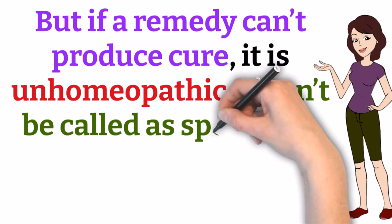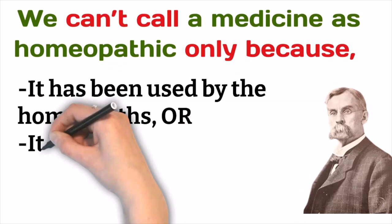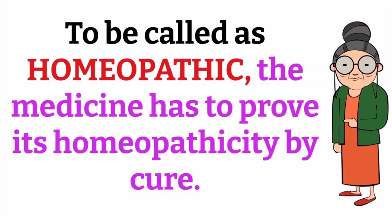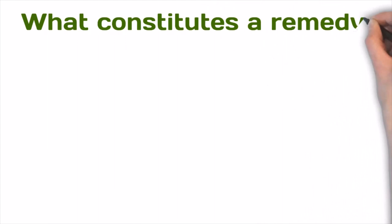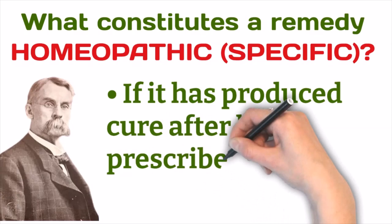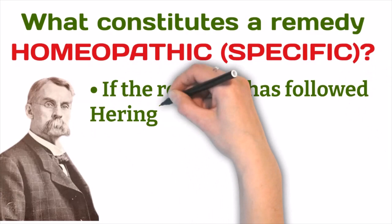If a remedy cannot produce cure, it is unhomeopathic and cannot be called specific. Kent stated we cannot call a medicine homeopathic simply because it has been used by homeopaths or prepared according to homeopathic principles. To be called homeopathic, a remedy must prove its homeopathicity by cure — specifically, it must produce cure after being prescribed on symptom similarity and the recovery must follow Hering's Law of Cure: from above downward, from within outward, and in the reverse order of symptoms.